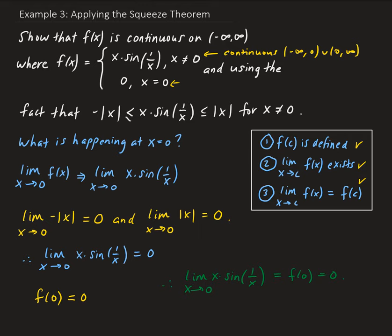Therefore, this function is continuous everywhere on the whole real number line. We have this piecewise function — we know x times sine(1/x) is continuous everywhere except zero, and the second part of the piecewise function says that at x equals zero the value is zero. We used the squeeze theorem to show the limit exists and equals the function evaluated at zero, so the function is continuous on the entire real line.